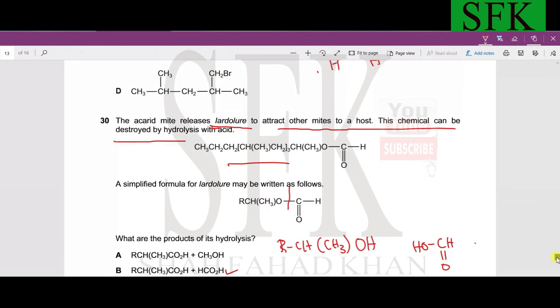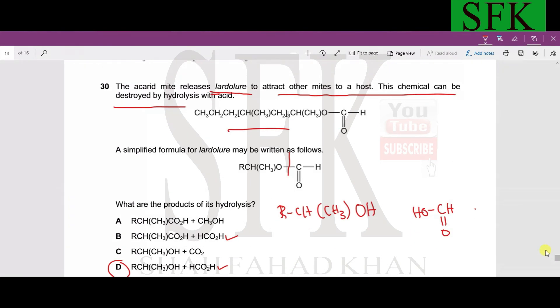MCQ number 30. This is a pretty simple, straightforward MCQ. What are the products of its hydrolysis? They're just asking us the product of acidic hydrolysis. Acidic hydrolysis breaks the ester bond. As the ester bond breaks, this carbonyl group gets the OH group and forms the acid, whereas the rest of the molecule forms the alcohol. Answer option B is the one which resembles these products.